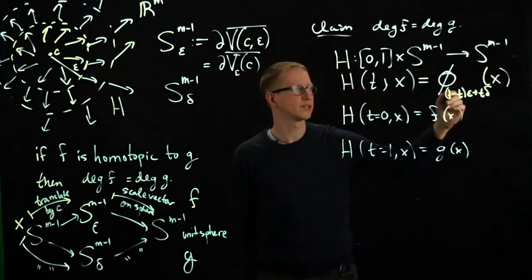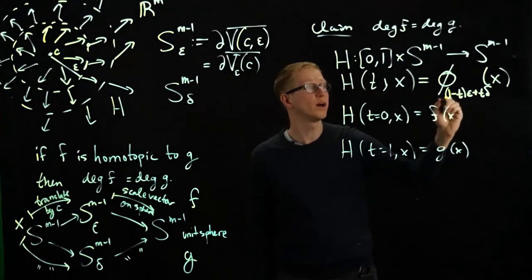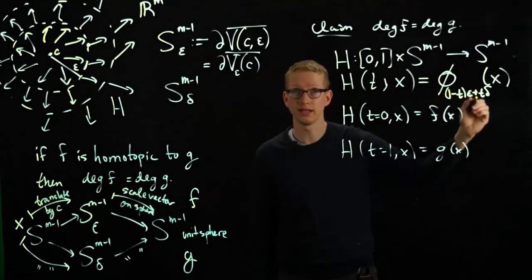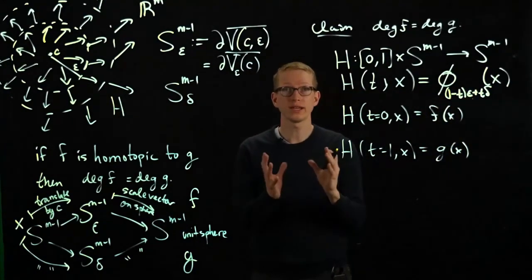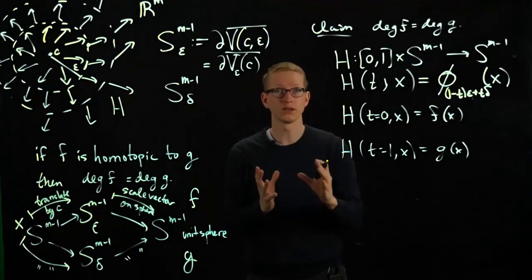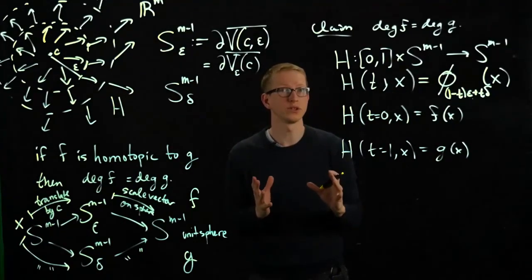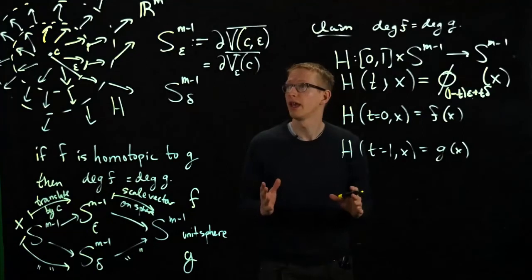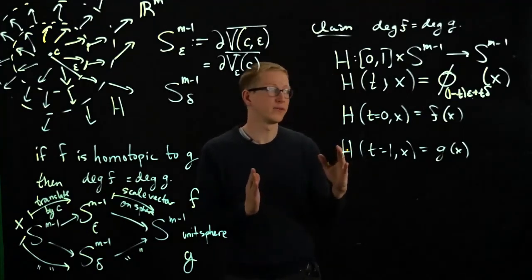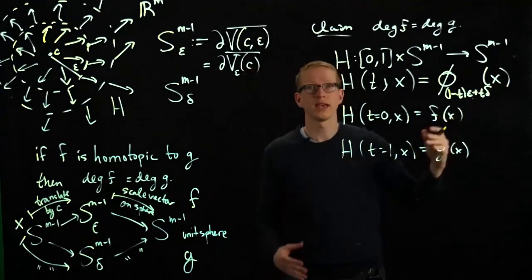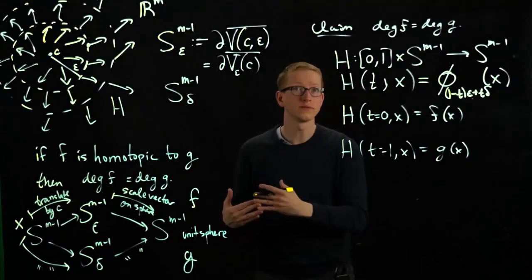So what this is doing is, we're looking at the sphere of radius one minus t epsilon plus t delta, then we restrict this vector field to that sphere. That's not going to be a tangent vector field, but it's still going to be a vector field. And then we rescale those vectors at every point x, and we'll get a new vector on the unit sphere.